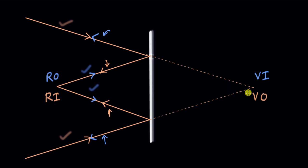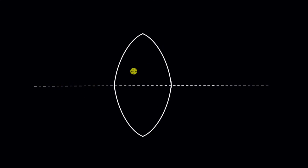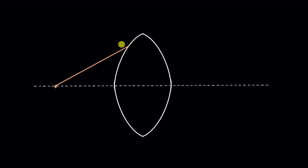Let's explore more about virtual objects with lenses and refraction. Here we have a thick convex lens with two refracting surfaces. A light ray from an object undergoes refraction at the first surface — the glass and air have different refractive indices — and bends towards the normal as it enters the glass.